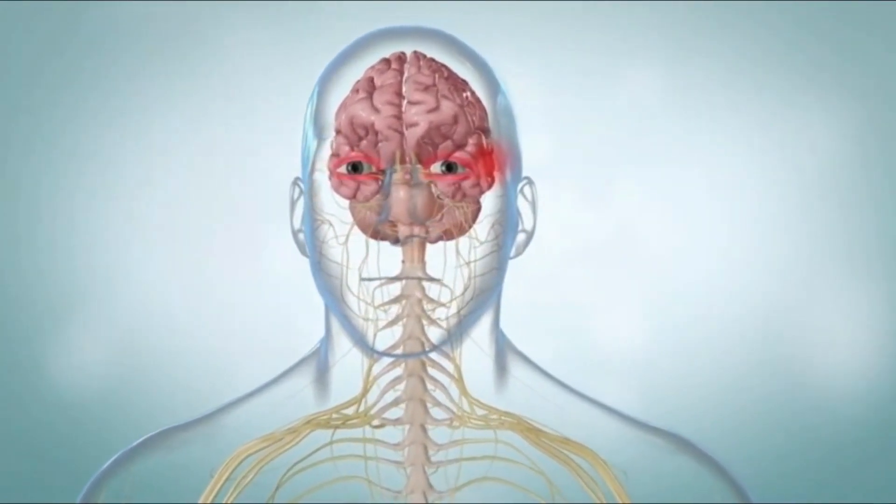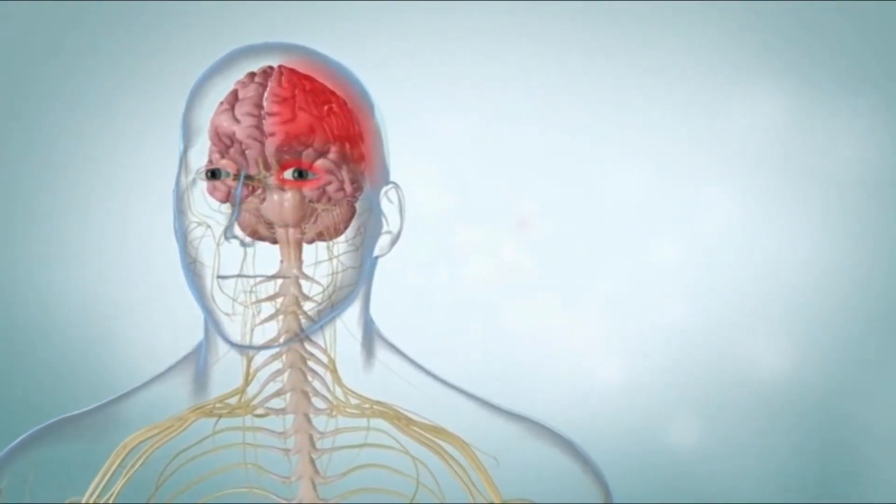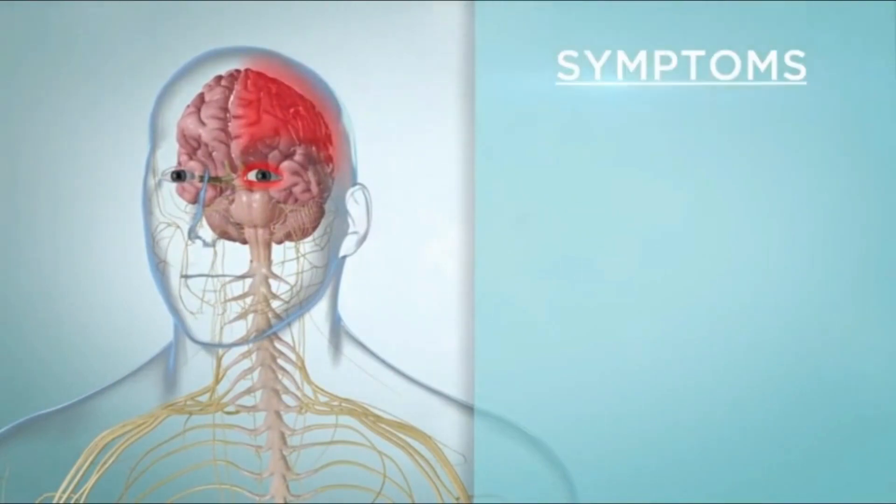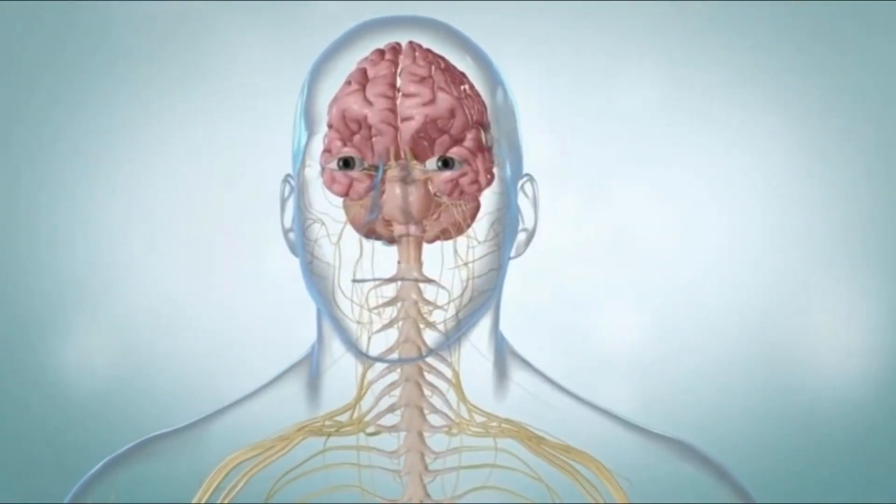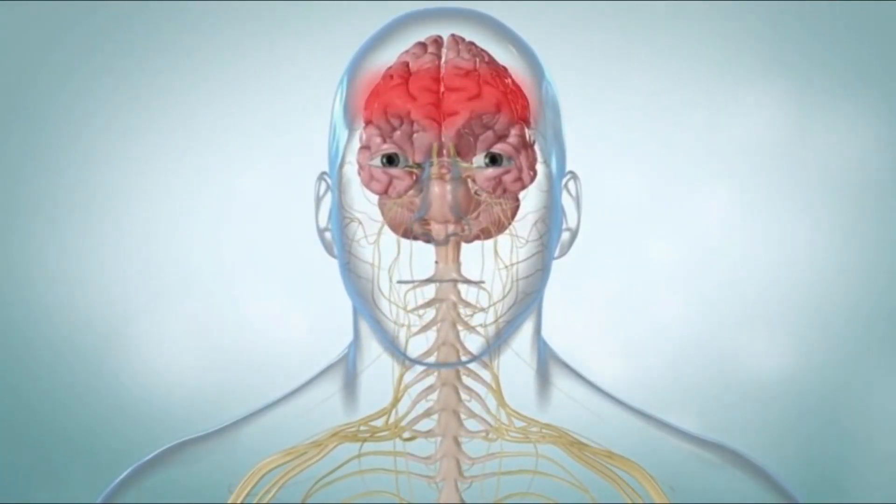The pain is severe and constant and does not throb. It happens in and around the eyes on the affected side. This may cause watery eyes, drooping eyelids, or vision problems on the same side of the head. The headache often goes into the forehead, temple, and cheek as well.